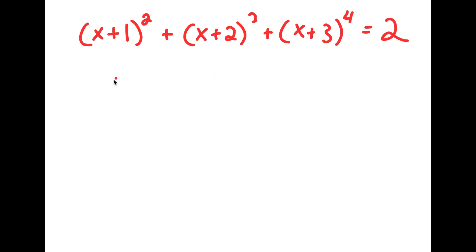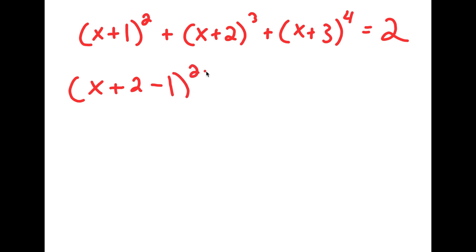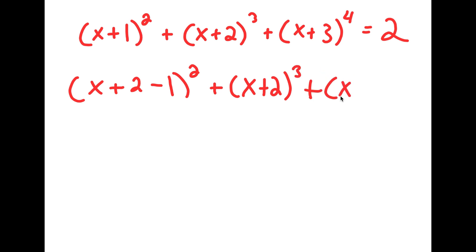To solve this, I'm going to start by rewriting x plus 1 squared as x plus 2 minus 1 squared. I'm going to leave x plus 2 to the power of 3 as the same, and rewrite x plus 3 to the power of 4 as x plus 2 plus 1 to the power of 4. Now this is equal to 2.